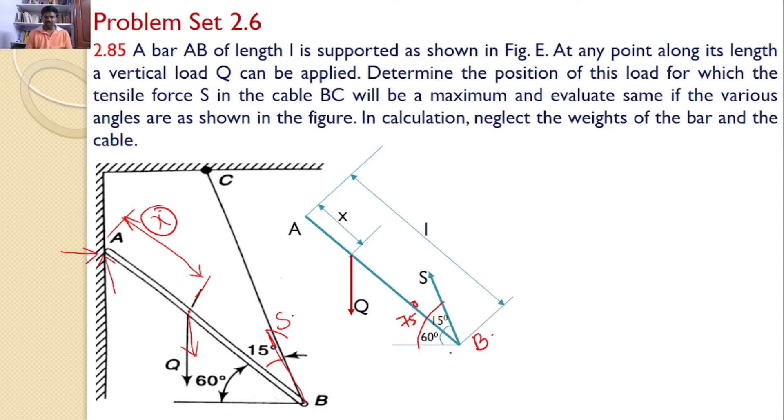So I can resolve this S force along horizontal and vertical. Now at A I can find two reactions that is S cos 75 and S sin 75. At A I can find two reactions that is RAH and RAV. Our interest is to find the value of x so that S is maximum.